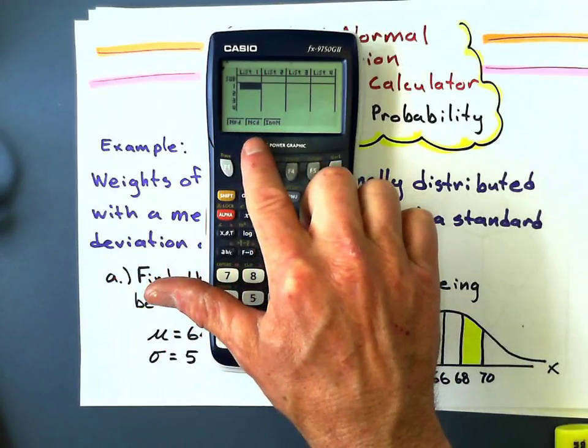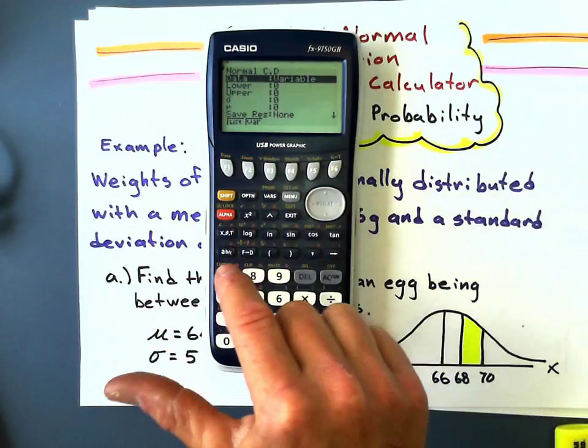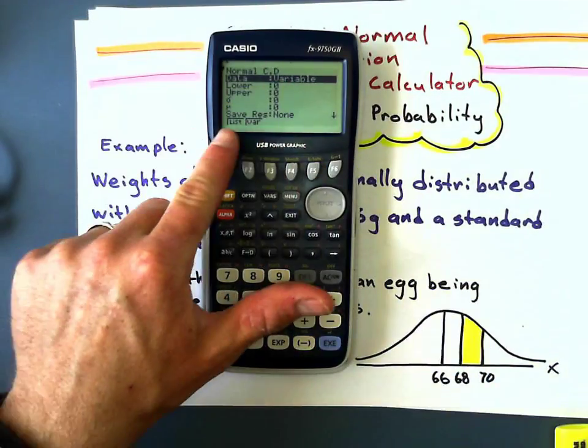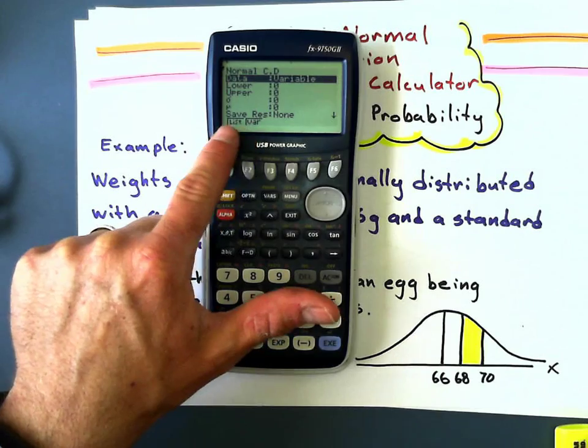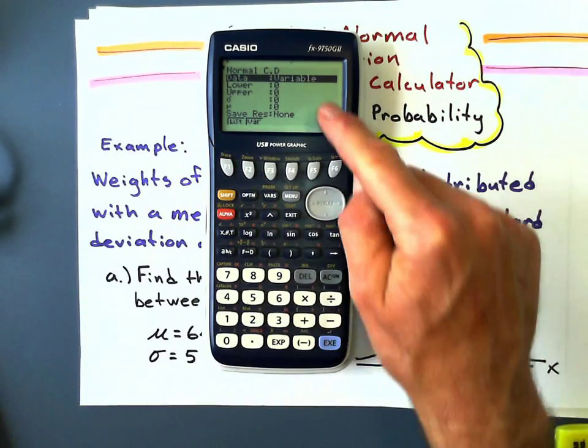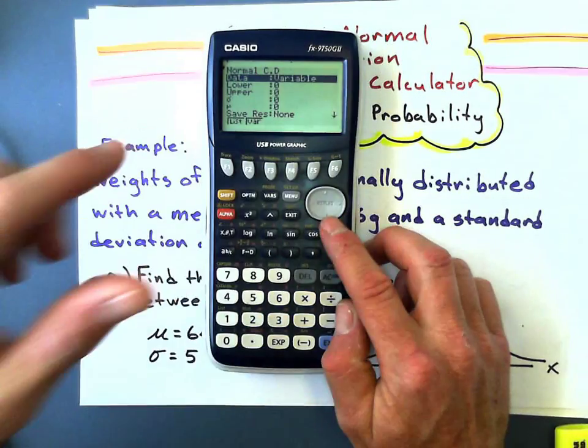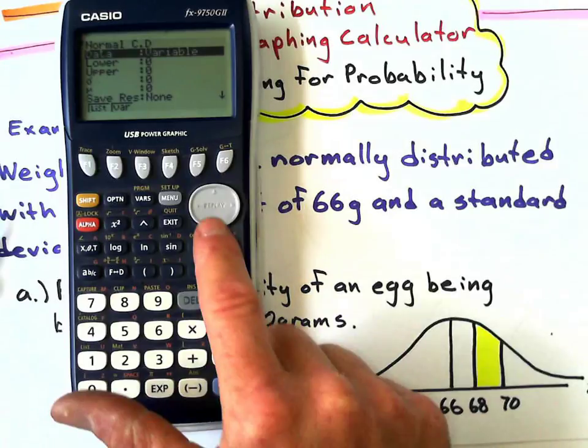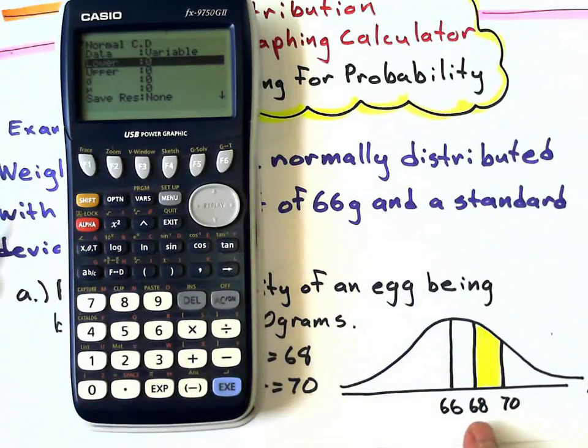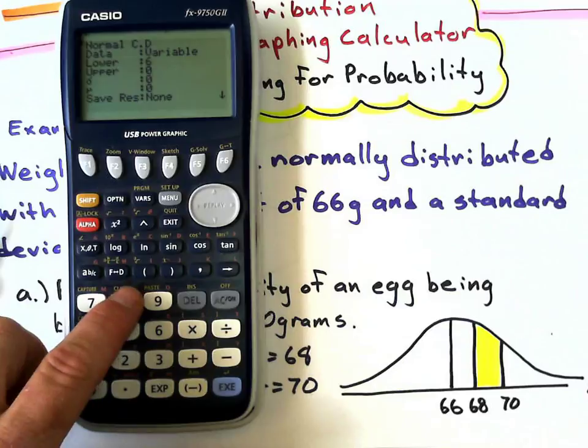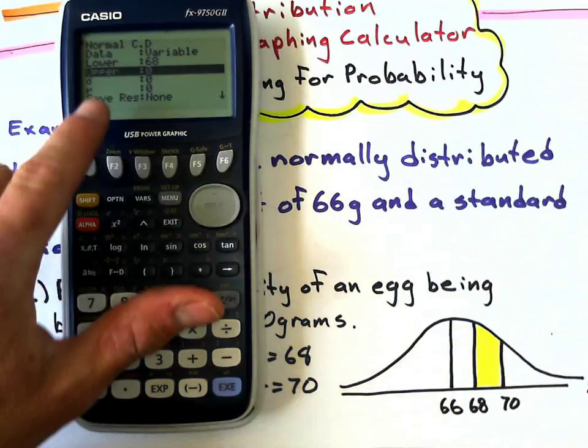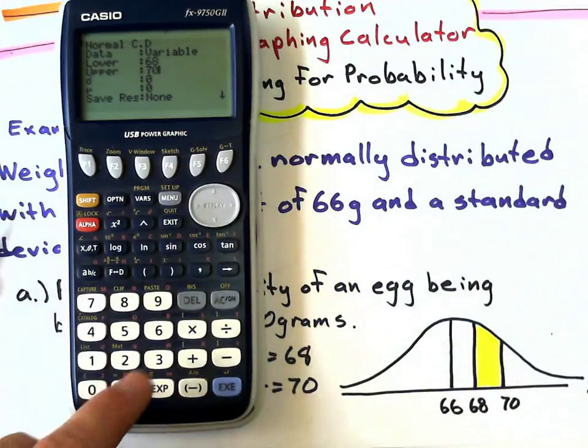Here I go to the second function, I think that stands for normal continuous data, until I get to this menu. If it gives you the choice of list and variable, I want variable, which is already selected.